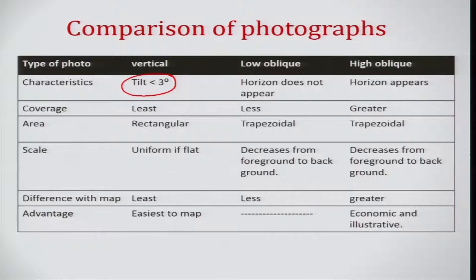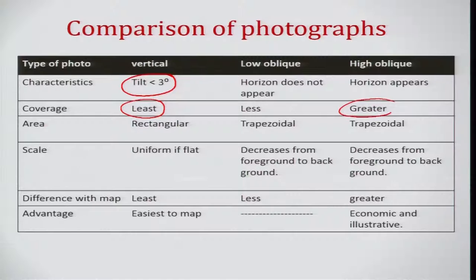In the case of low oblique, the horizon does not appear; in high oblique, the horizon appears. In terms of coverage, you will have the least coverage with vertical photographs, comparatively more with low oblique, and a very large area covered with high oblique aerial photographs. Area covered will be mostly rectangular for vertical, and trapezoidal for both low and high oblique.